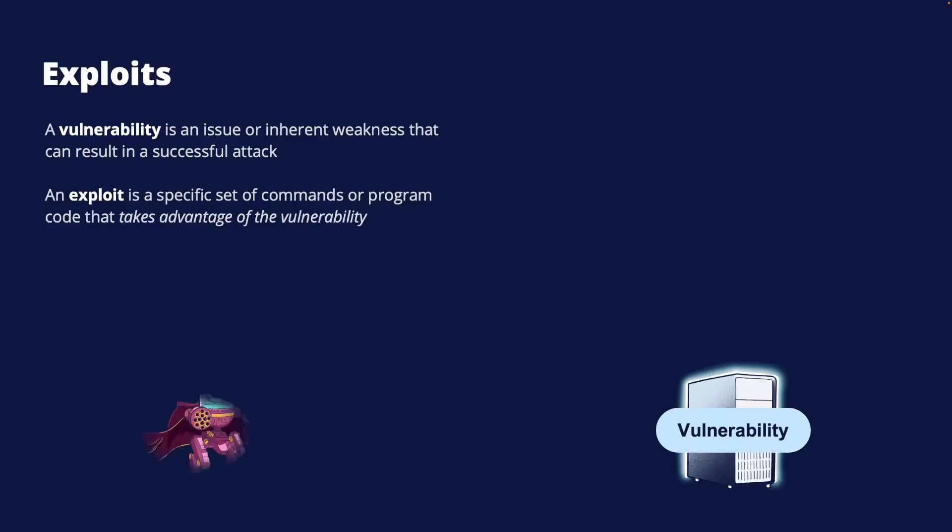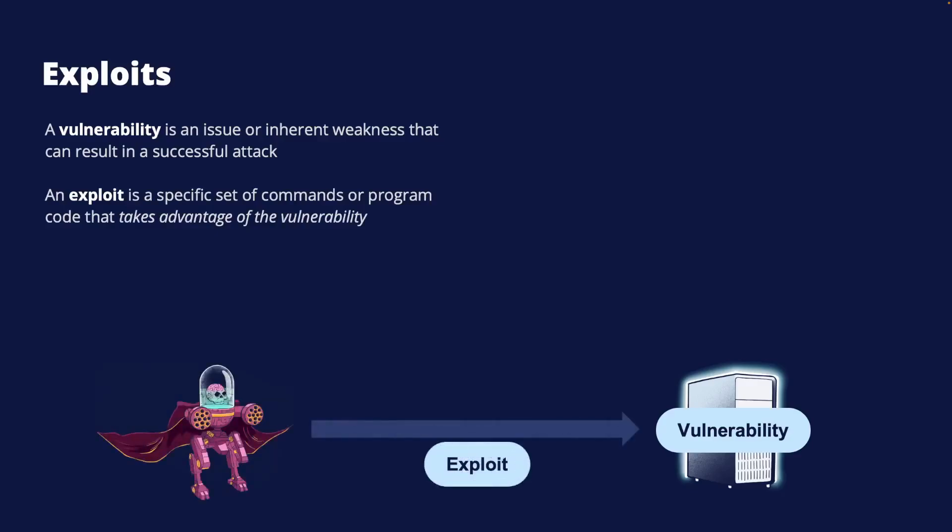An exploit is a specific set of commands or program code that takes advantage of the vulnerability. It is a well-defined way of using a vulnerability in order to compromise confidentiality, integrity, or availability. The exploit is typically the piece of code used to get access to the vulnerable system, or it could be a specifically crafted request sent to a server that would not be properly handled, thereby bypassing security controls.